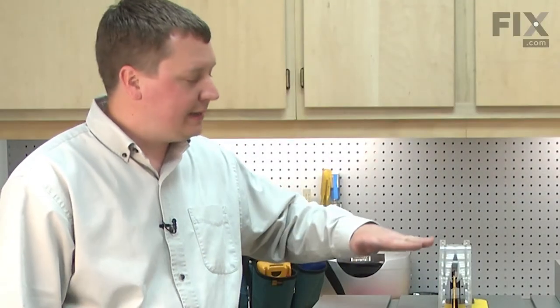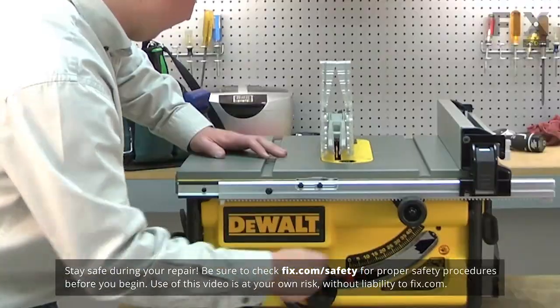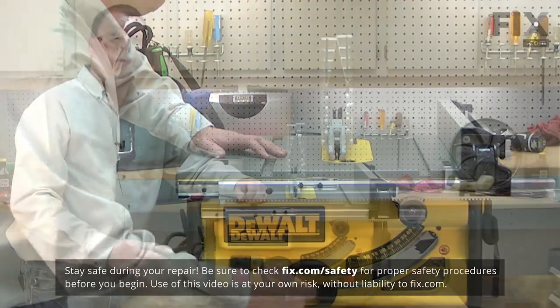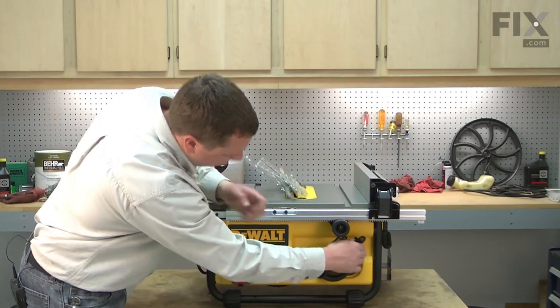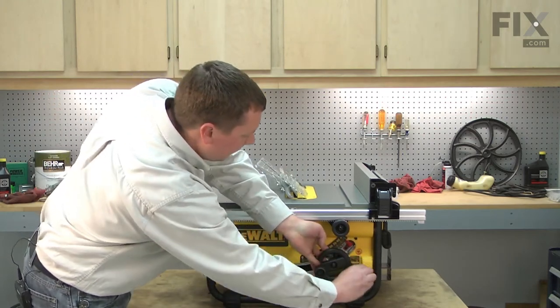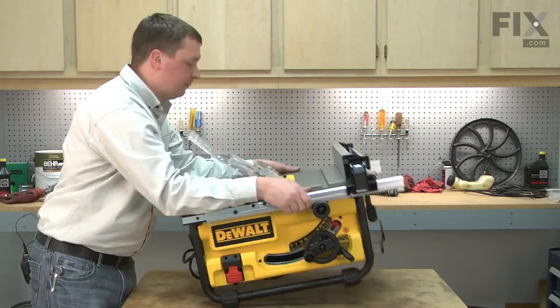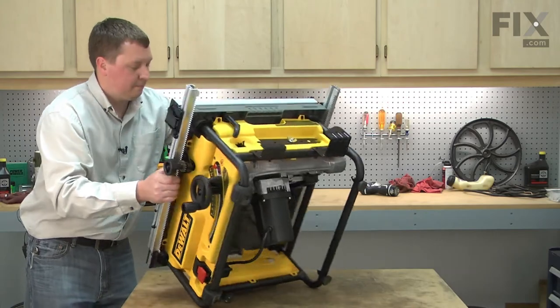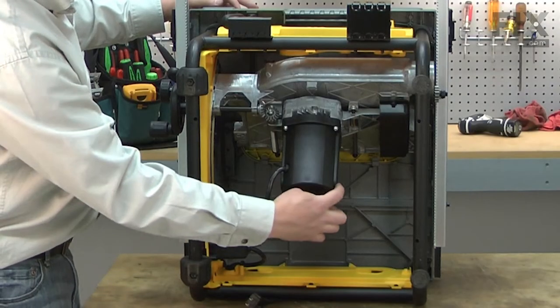I'll begin by lowering the blade down into the saw as far as it will go. Now, I'm going to bevel the blade to 45 degrees and tip the saw over onto the cord side. And this gives us easy access to the brush caps.